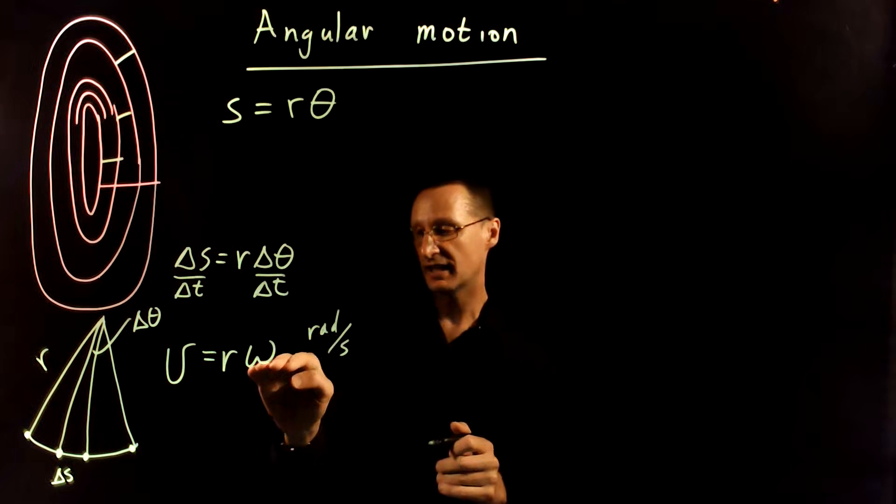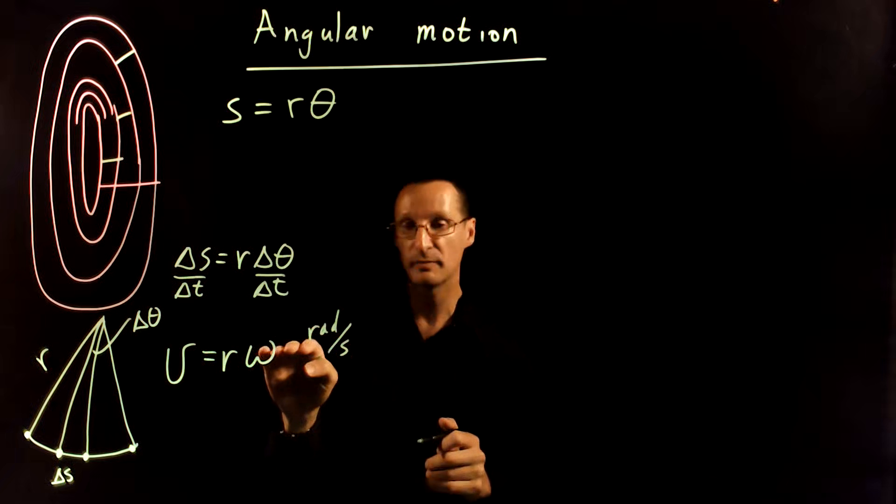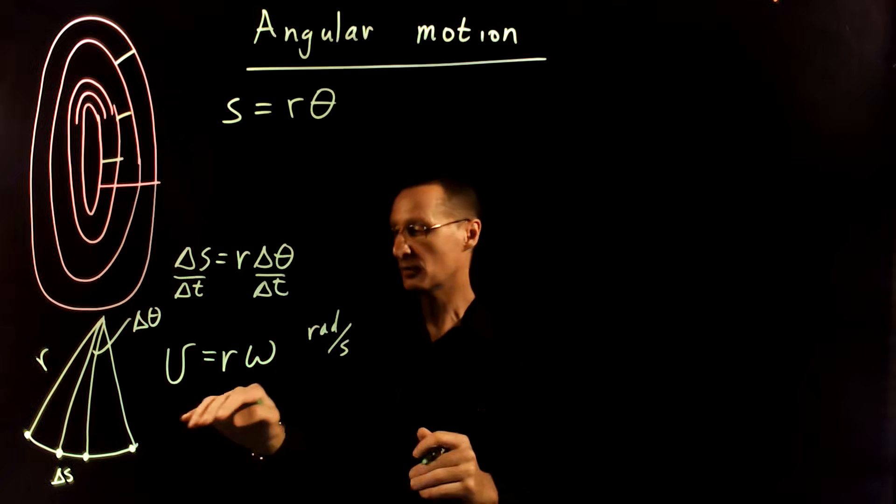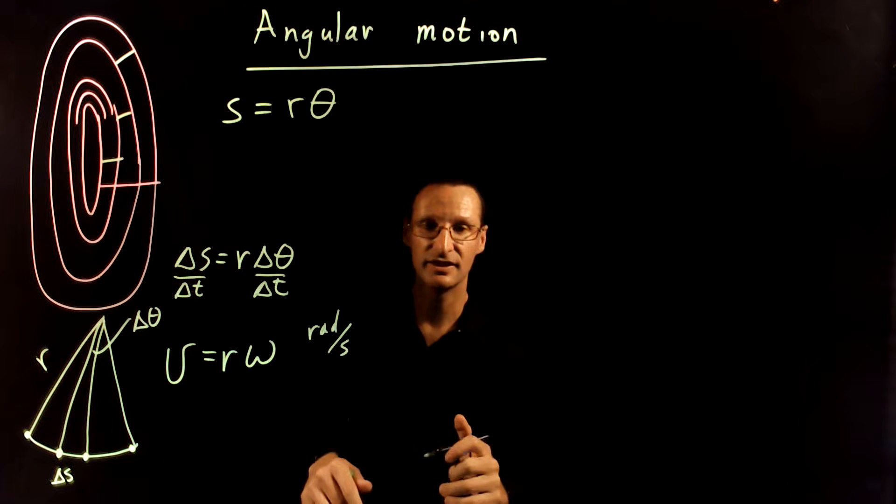Now, why would I want to invent a confusing Greek-lettered term like omega, angular velocity, when I have a perfectly good thing like velocity, regular velocity, to use?